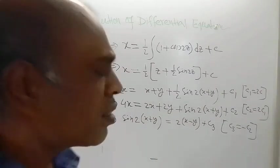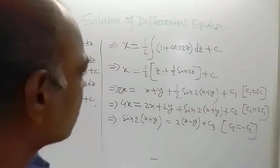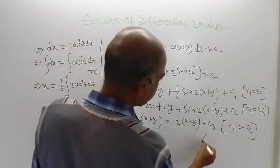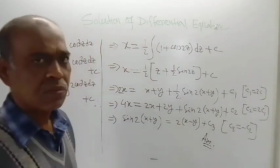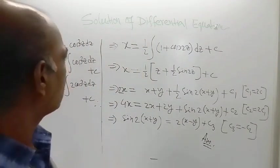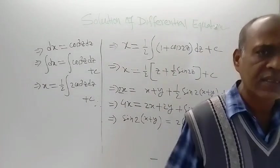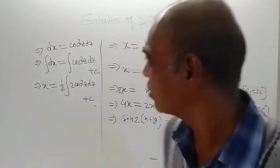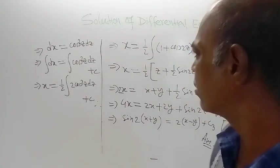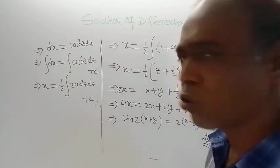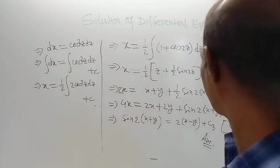And minus c2 has been replaced by plus c3. So this is the answer to the given problem. You can see that the solution was so easy. Only one substitution was required, and it was very simple — just assuming x plus y equals z — and then a straightforward procedure gives the solution.